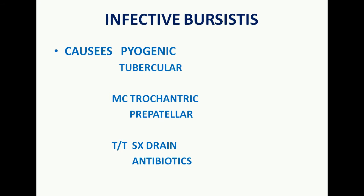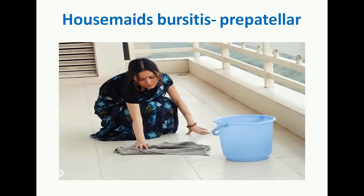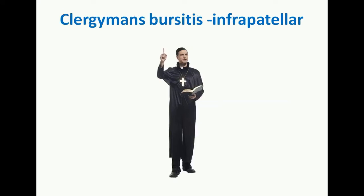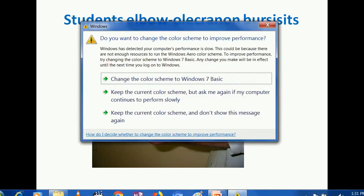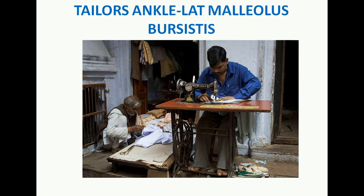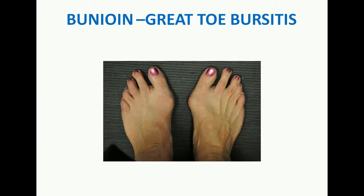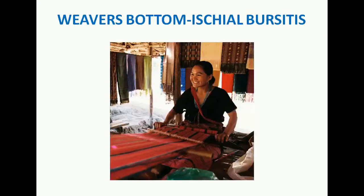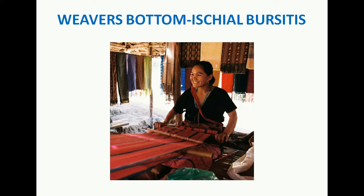These named bursitis types can be asked as MCQs. Housemaid's bursitis is pre-patellar bursitis. Clergyman's bursitis is infra-patellar bursitis. Student's elbow is olecranon bursitis. Taylor's ankle is lateral malleolus bursitis. Bunion is great toe bursitis. Weaver's bottom is ischial tuberosity bursitis.